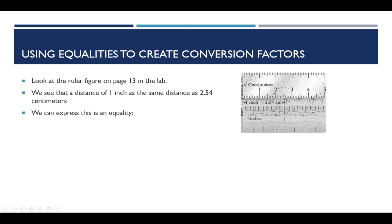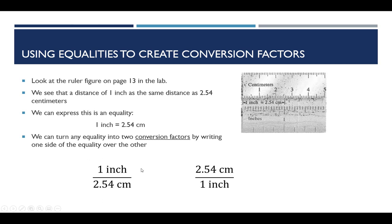So we can change this into an equality, where we have 1 inch is written as being equal to 2.54 centimeters. Now whenever we have an equality like this, we can change it into conversion factors, which allow you to convert one unit to another. And we do this by just dividing one side of the equation by the other side. So these are our possible conversion factors: 1 inch over 2.54 centimeters and 2.54 centimeters over 1 inch.